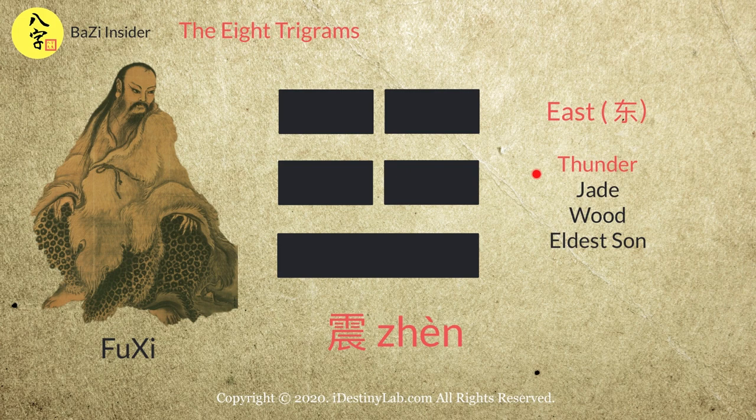The next Gua represents the east direction. It also represents thunder, jade colour, and the eldest son. Its 5 elements is wood.